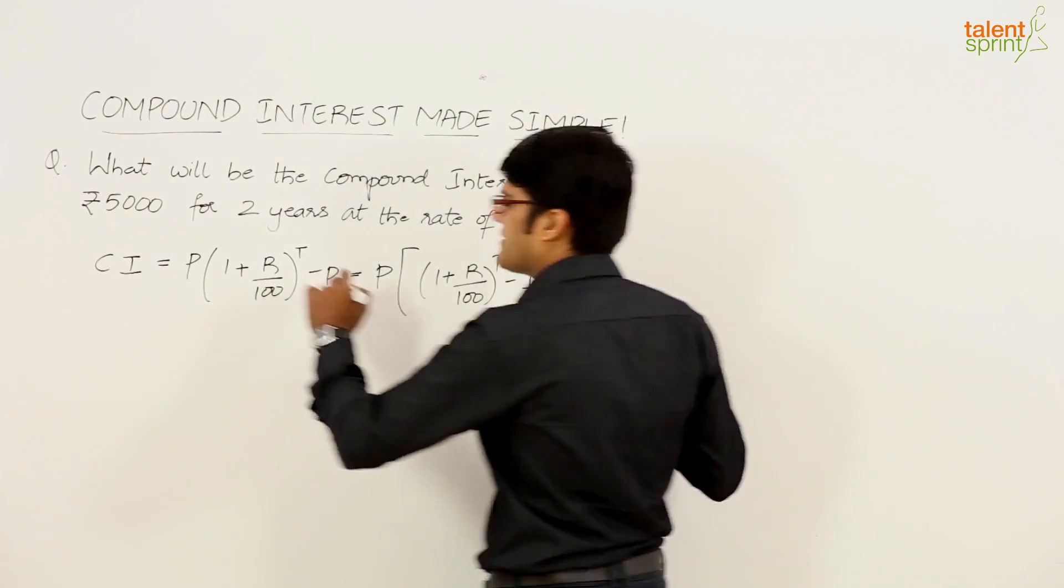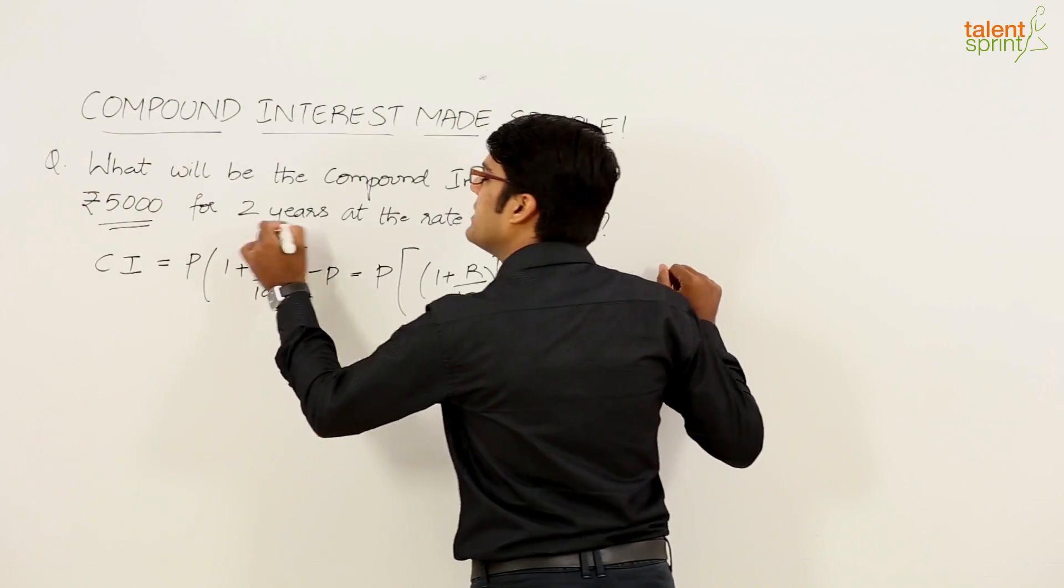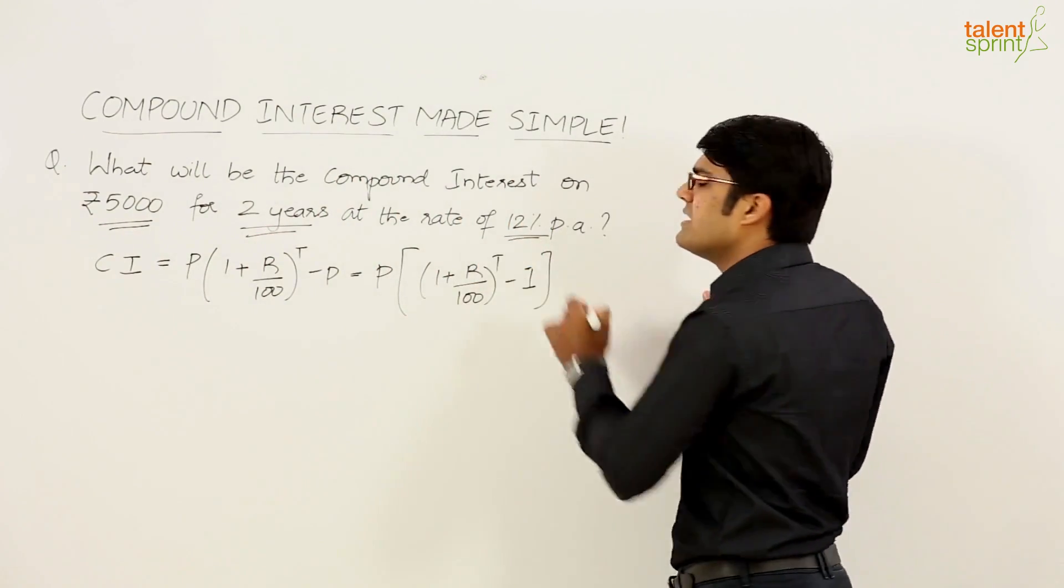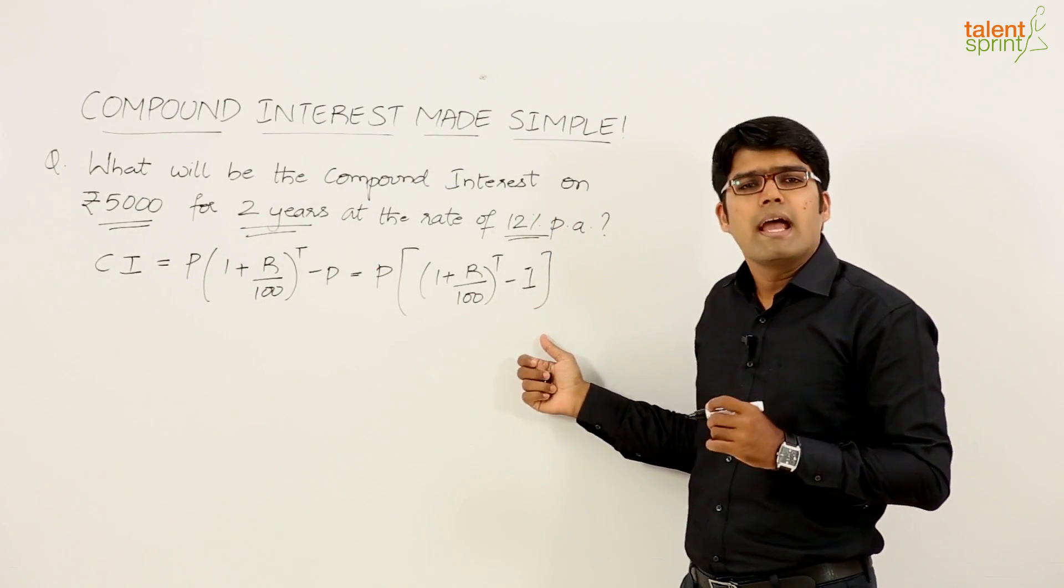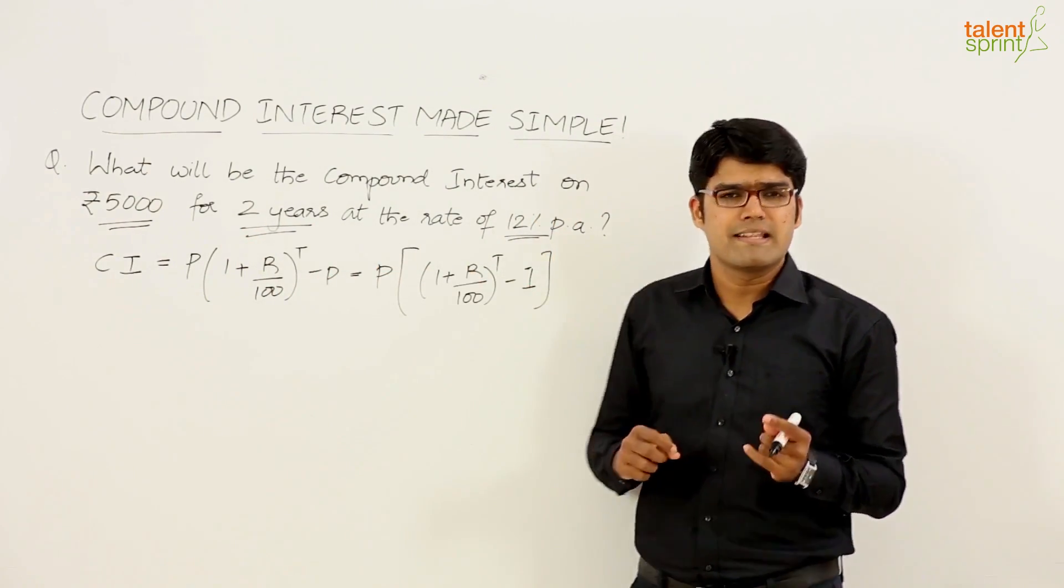The principle in the given question here is 5000, the time period is 2 years and the rate is 12 percent per annum. Like I said, just substitute the values in any of the formula and simplify it to get the right answer.